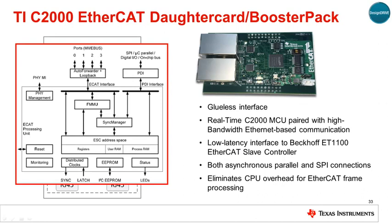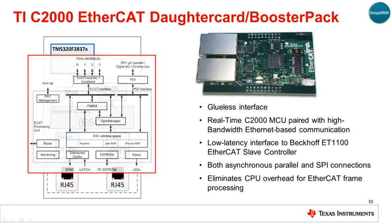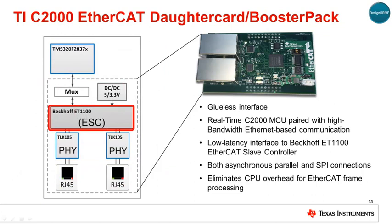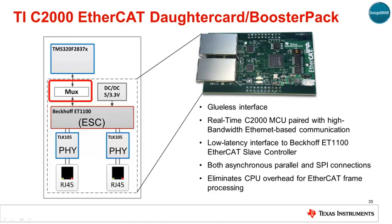Here we see the Beckhoff ET1100 EtherCAT Slave Controller, or ESC, which provides all the hardware packet processing needed to support the EtherCAT protocol. The C2000 EtherCAT daughter card consists of this device along with two PHYs and some simple MUXs, which allow for switching between the SPI and EMIF interfaces. Note that this glue logic isn't needed in an end-user application — the ESC can be directly connected to the C2000 MCU in a customer design. This solution provides a low-latency interface to the ESC with very low CPU overhead to support EtherCAT communications.